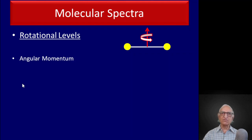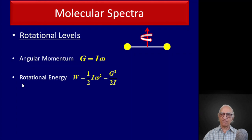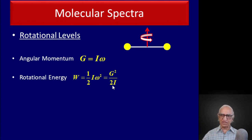First, what is the angular momentum of a rotating body? The angular momentum g is equal to I omega, where I is the moment of inertia. The rotational energy is half I omega squared, which can also be written as g squared divided by 2I, where g is the angular momentum and I is the moment of inertia.